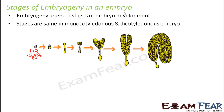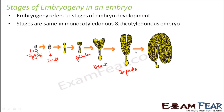The stages of embryogenesis are the same in both monocot and dicot embryos. Initially it is a single cell, then it becomes a two-cell structure, then an eight-cell structure, then a globular stage with a rounded shape, followed by a triangular shape, and then the heart-shaped stage. From the heart shape it becomes torpedo-shaped and finally forms the mature embryo.